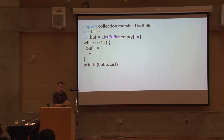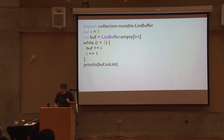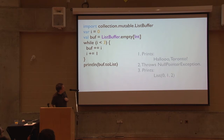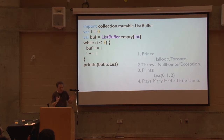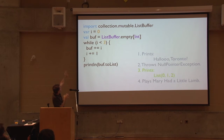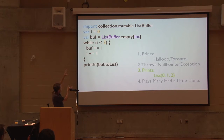Here's a puzzler - a little bit of code that has side effects. I want you to look at that code and see if you can figure out what it's going to do. Number one: it prints 'hello Toronto'. Number two: throws null pointer exception. Number three: prints List(0, 1, 2). Or number four: plays Mary Had a Little Lamb. It does what you think it does - it just prints List(0, 1, 2). It has a var, a mutable data structure, a while loop, mutation, reassignment of var - everything imperative - but I can still reason about it because it's simple enough. I can understand that code in isolation.